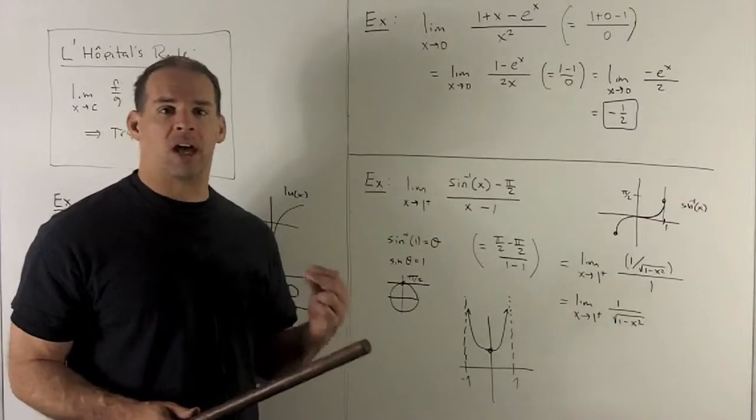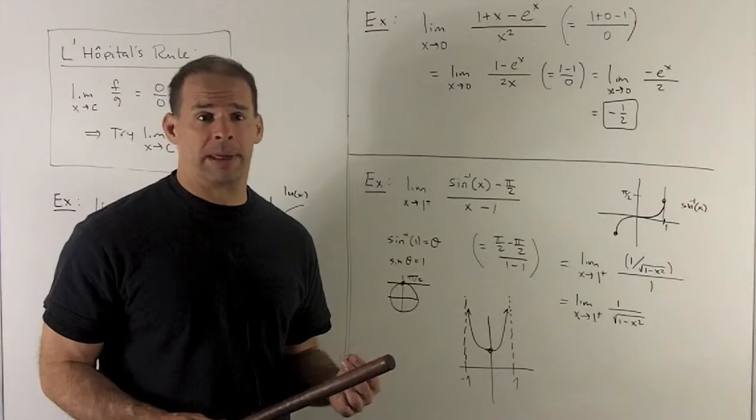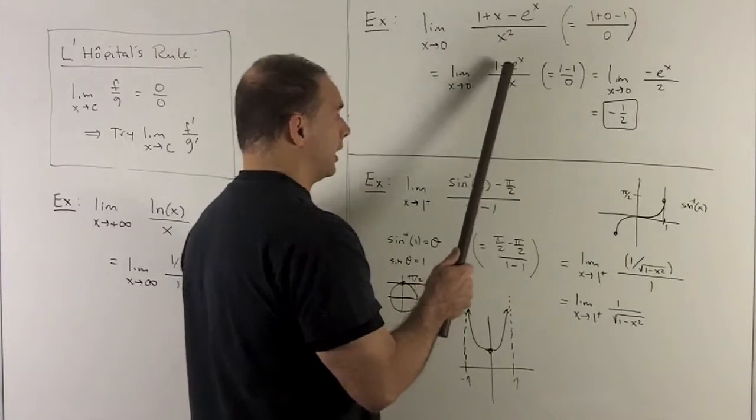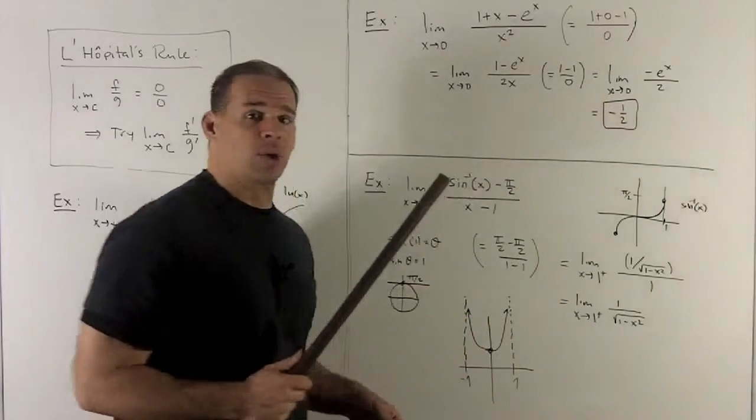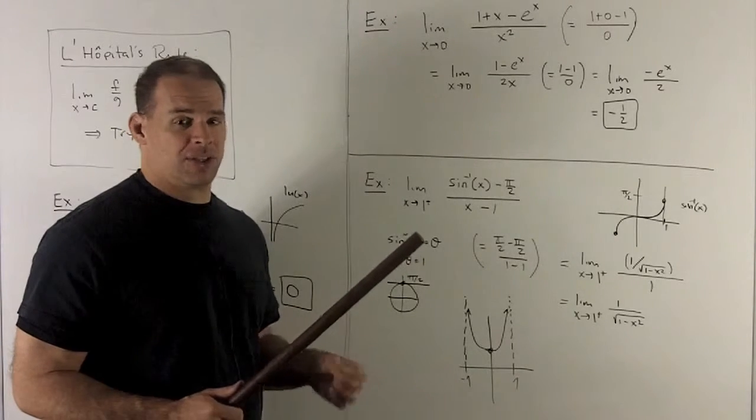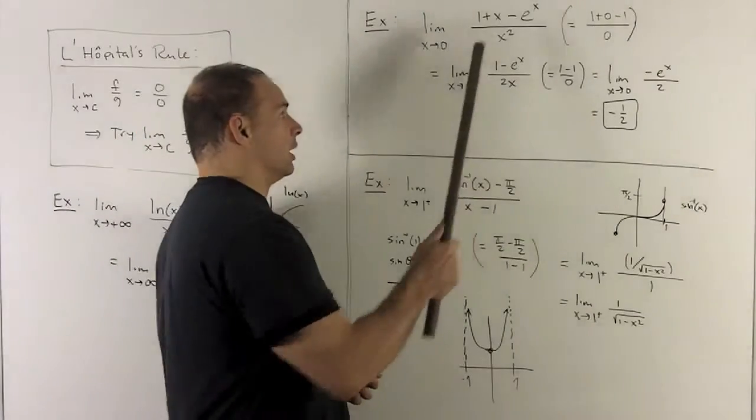We're allowed to use L'Hôpital's rule as many times as we want, as long as indeterminate forms keep coming out. Now I do the derivative of this. We're going to get minus e to the x goes to minus e to the x. 2x goes to 2. I put my 0 in and out comes minus 1 half. Since that limit turns out to be a number, that's going to be our original limit.